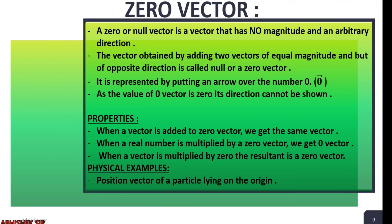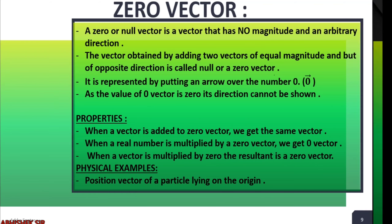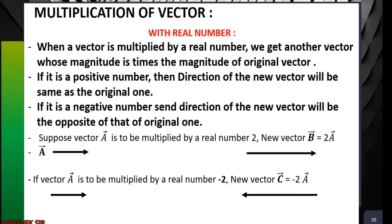Another example is the acceleration vector of an object moving with uniform velocity. An object moving with uniform velocity has no acceleration, so the acceleration vector is a zero vector. This shows that zero vectors exist even though they represent nothing.